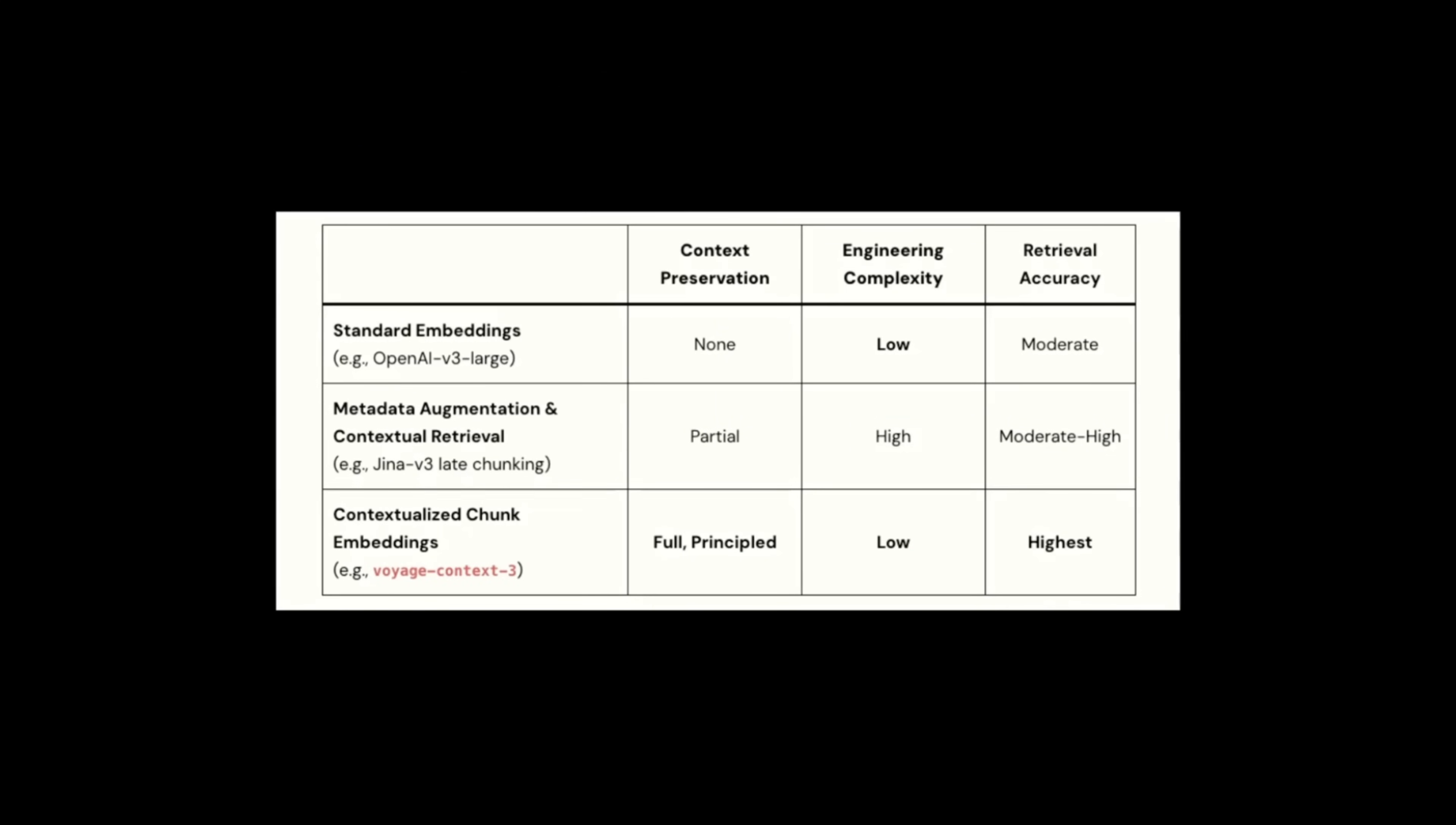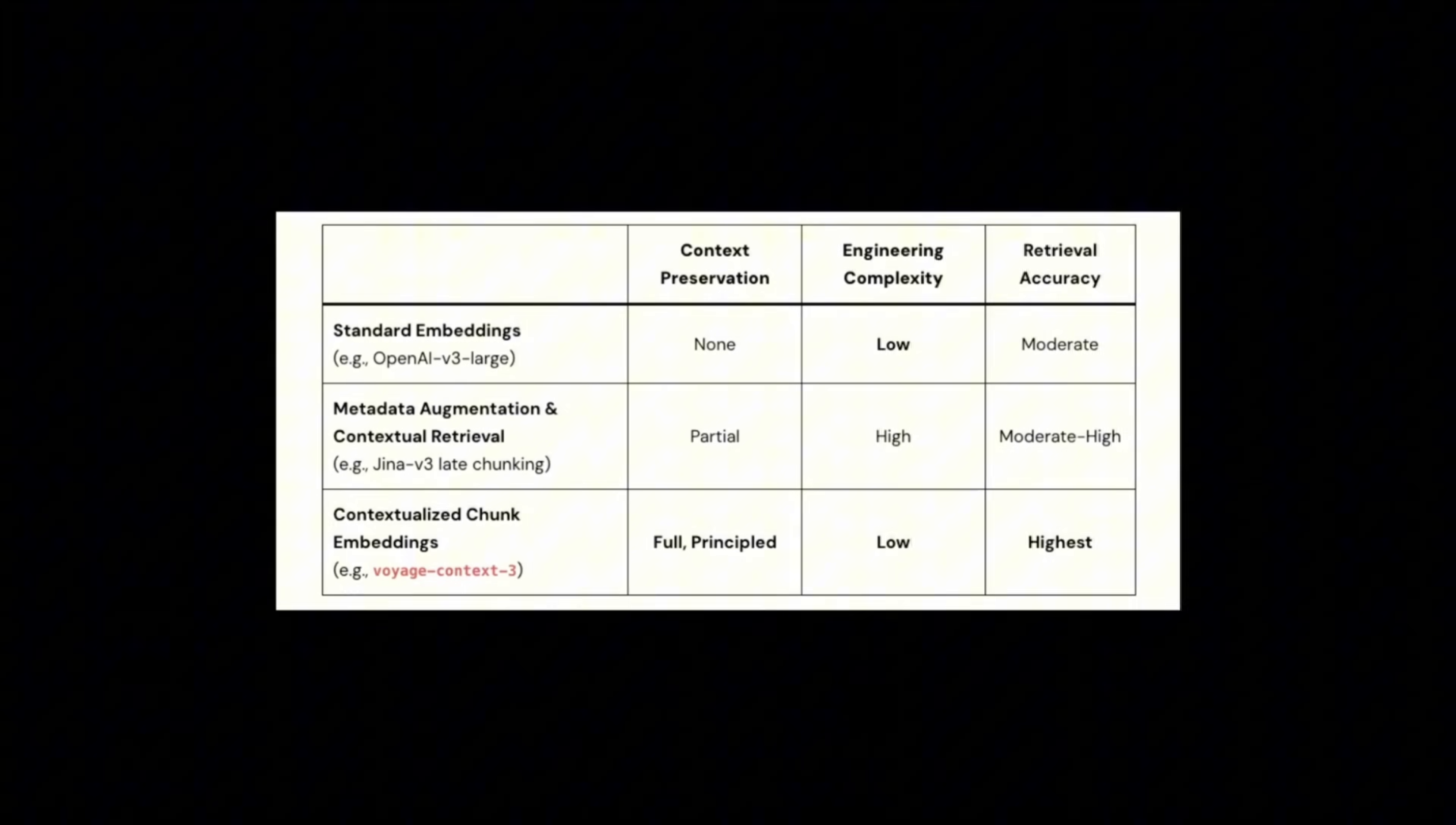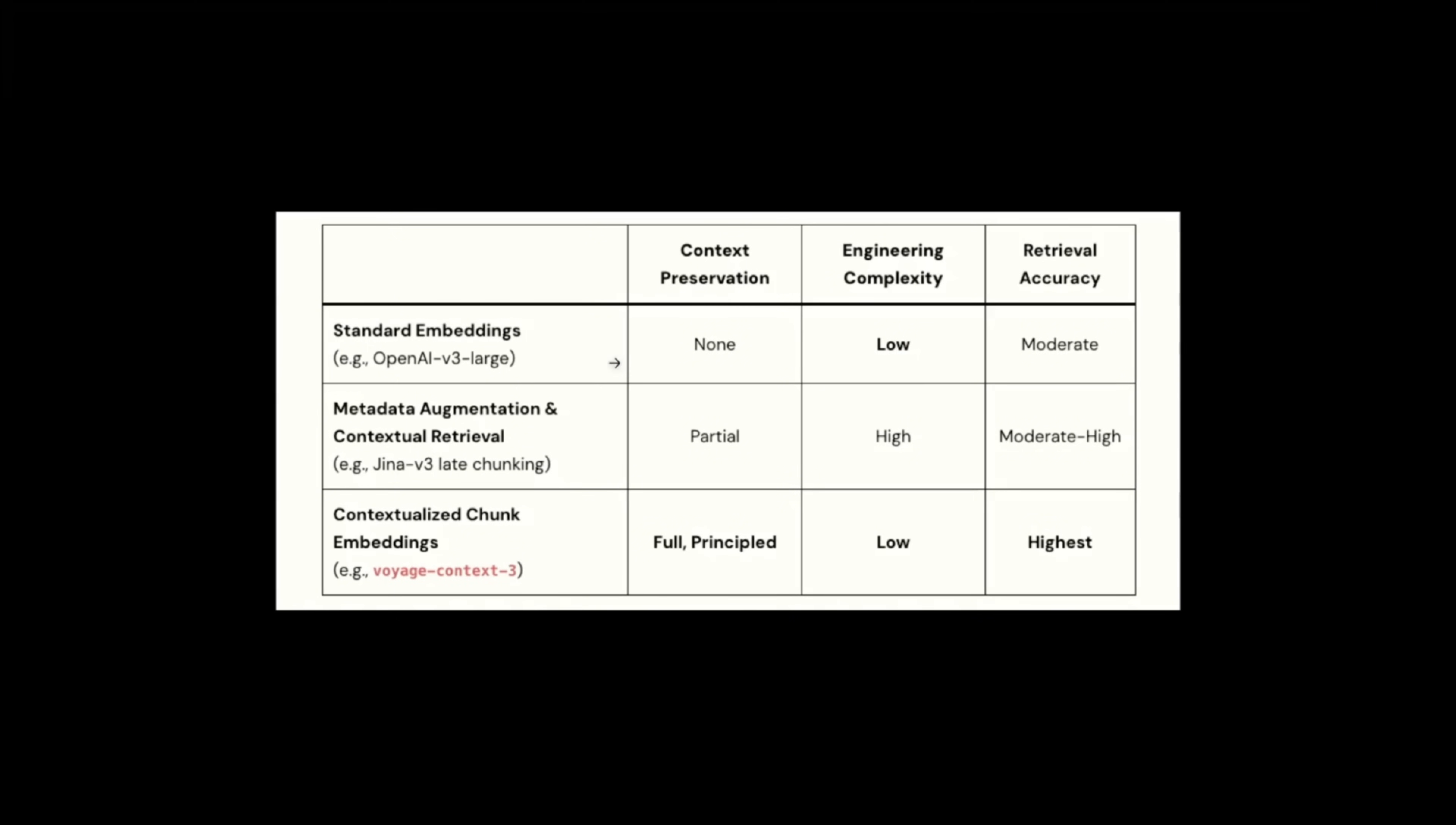Here's how the comparison looks like. Now keep in mind, this is based on their marketing material. So take it with a grain of salt. They're comparing it with something like dense embeddings from OpenAI or any other embeddings, which have no context preservation. Then you have metadata augmentation, you add summaries or contextual retrieval, which have partial contextual information. Now, in case of the contextualized chunk embeddings, you're not using an LLM, you're using an embedding model, which is usually a lot cheaper. But because of the nature of how this embedding model is trained, you are going to preserve a lot more context. And usually, since you get a fixed sized embedding model at the output, the complexity of integration is going to be very similar to just replacing it with a dense embedding model. And according to them, this gets you the highest retrieval accuracy. We're going to look at a code example later in the video.